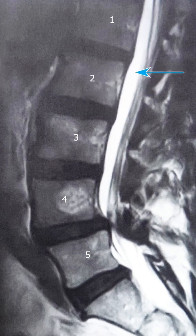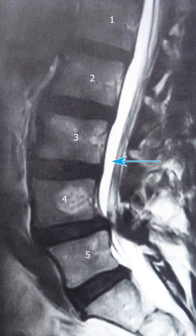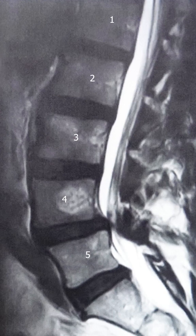If you look here, you see this white stuff, which represents the spinal fluid in your spinal canal. A normal size spinal canal would be areas such as here and down here — that's how the normal size of the spinal canal should look.